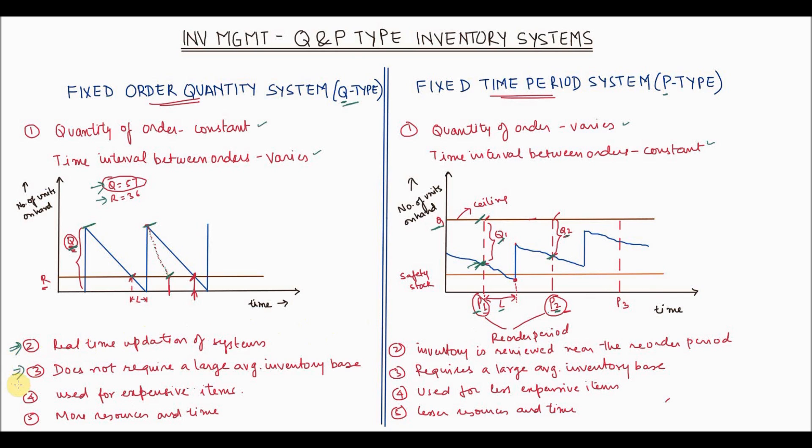The fixed order quantity system does not require a large average inventory base because this is based on quantity. So as soon as the quantity hits the reorder point, that means you have less inventory available, the order is triggered to the vendor. So again you can get the replenishment.